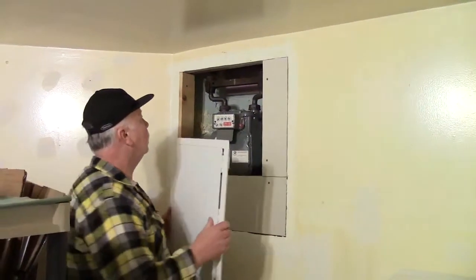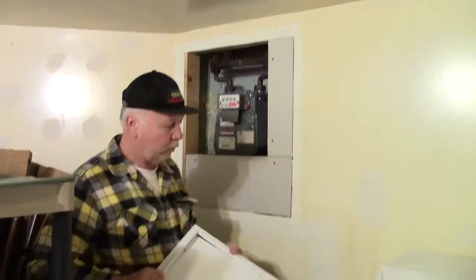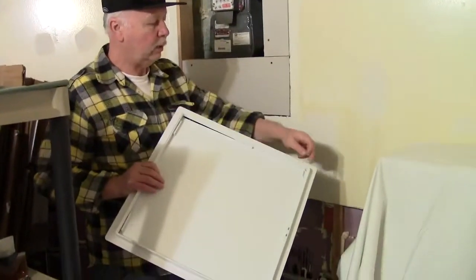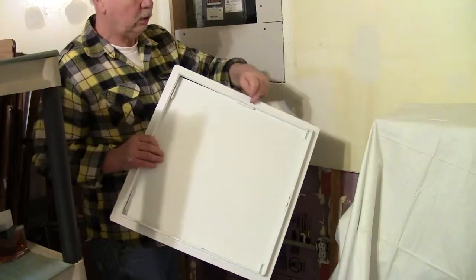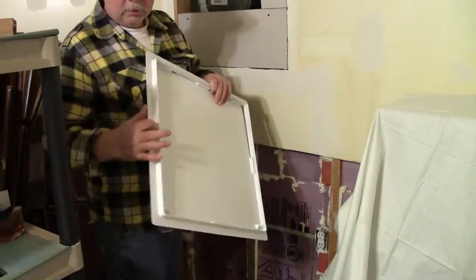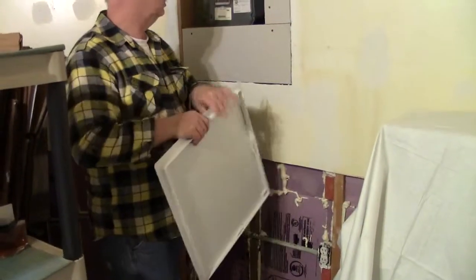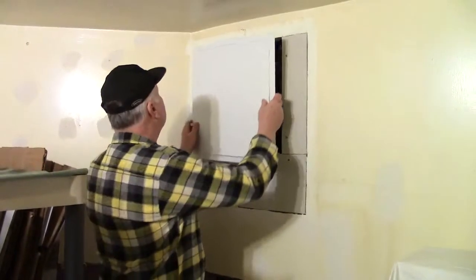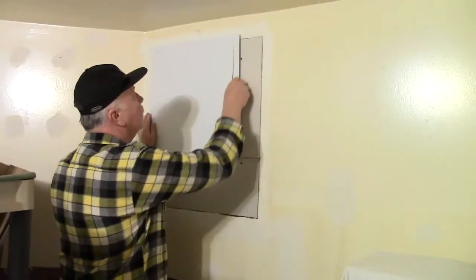And then when this cover goes on, after everything's finished, when the paint's done and everything, you just put some silicone all the way around here, all around the edge. When the silicone is on there, then you snap it in through here like this.